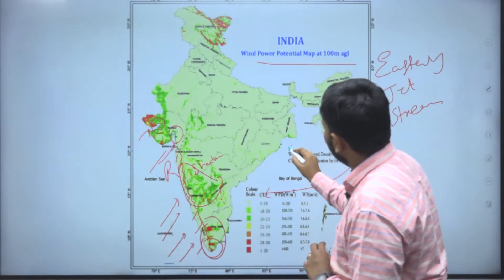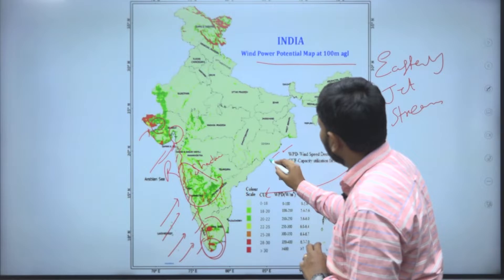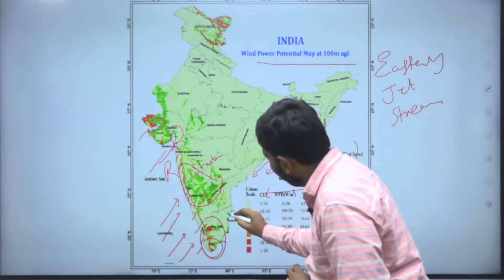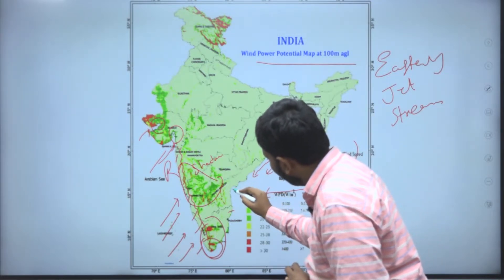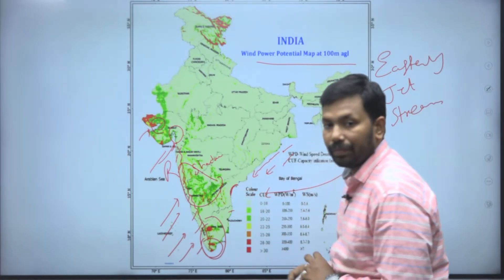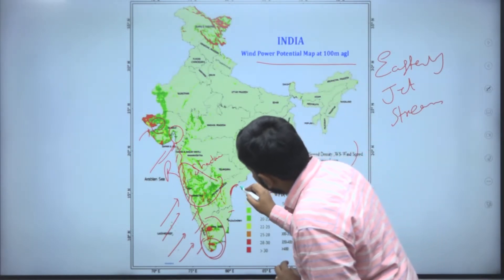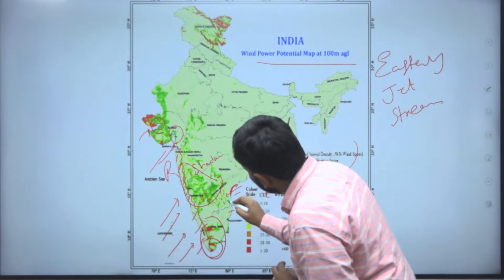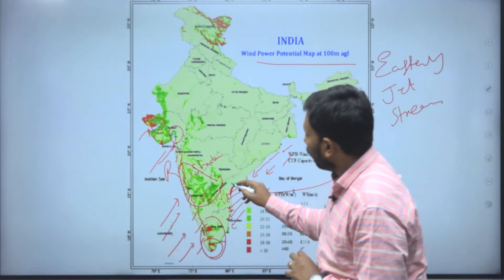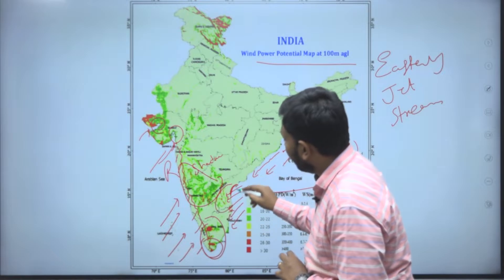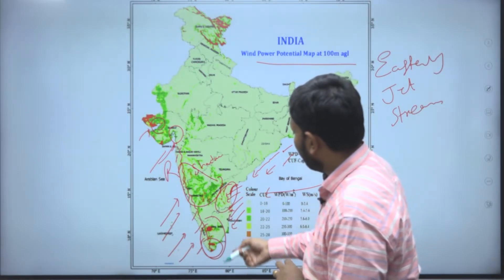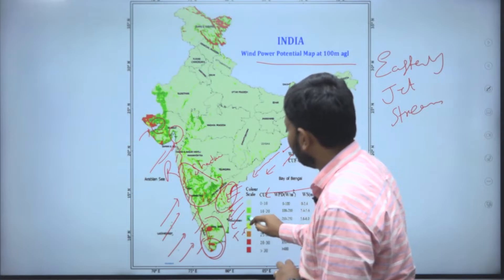In the northeast monsoon season, particularly along the coastal region where there is a slight geographic bend, there is a huge amount of harvestable wind energy. This applies especially to Andhra Pradesh — particularly the Rayalaseema region — and Tamil Nadu.